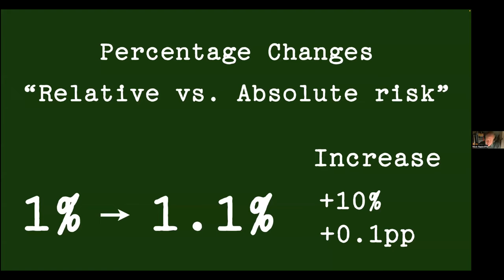Percentage changes are always problematical. If something goes from 1% to 1.1%, the increase is 10% multiplicatively — because 1.1 is 10% bigger than 1 — but it's a 0.1 percentage point increase. That's what 'percentage point' means. Unfortunately there's no standard way of writing that. I tend to use PP; others use percent PT. It's super important to understand the difference — sometimes called relative versus absolute risk when measuring risk.